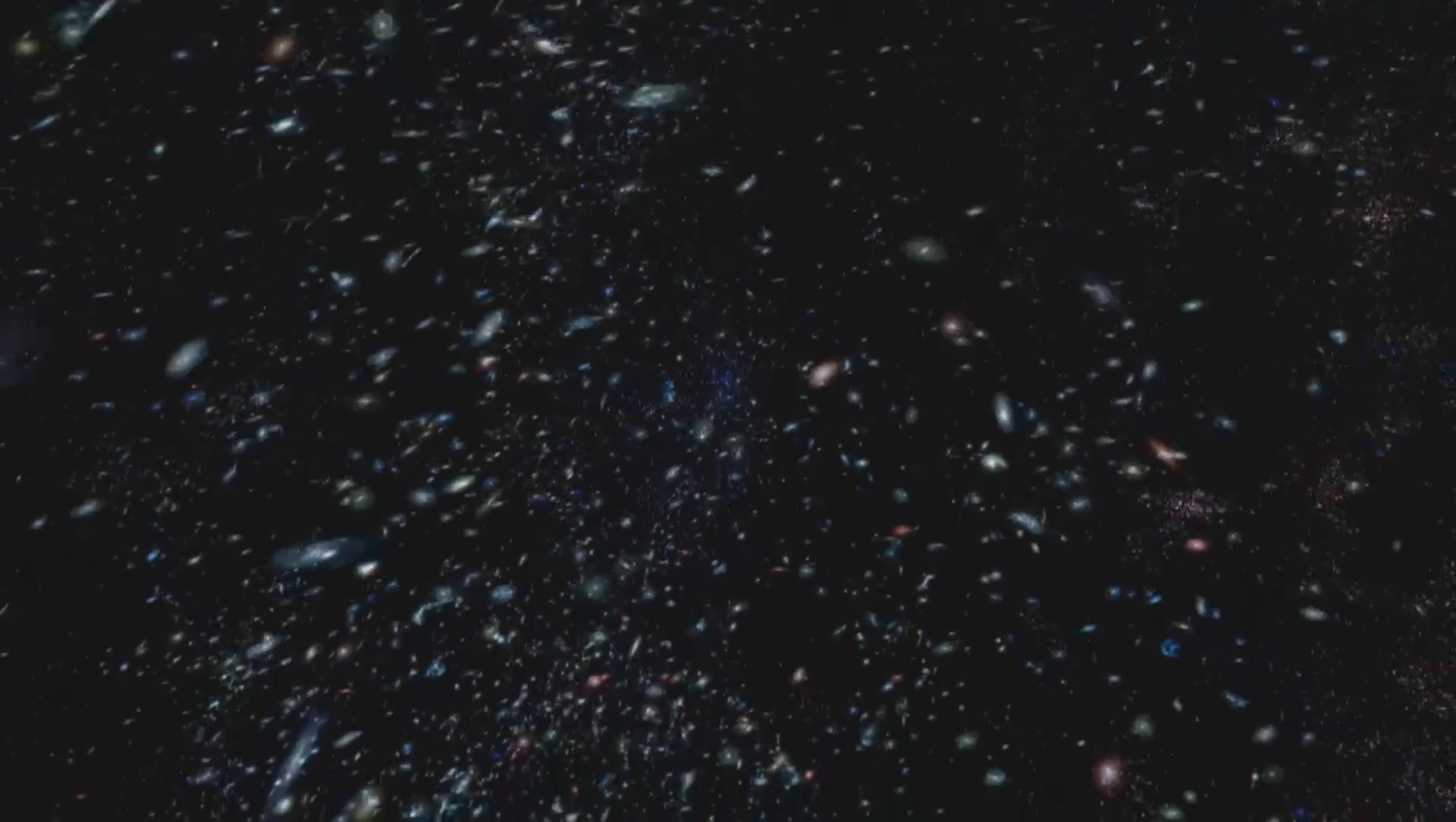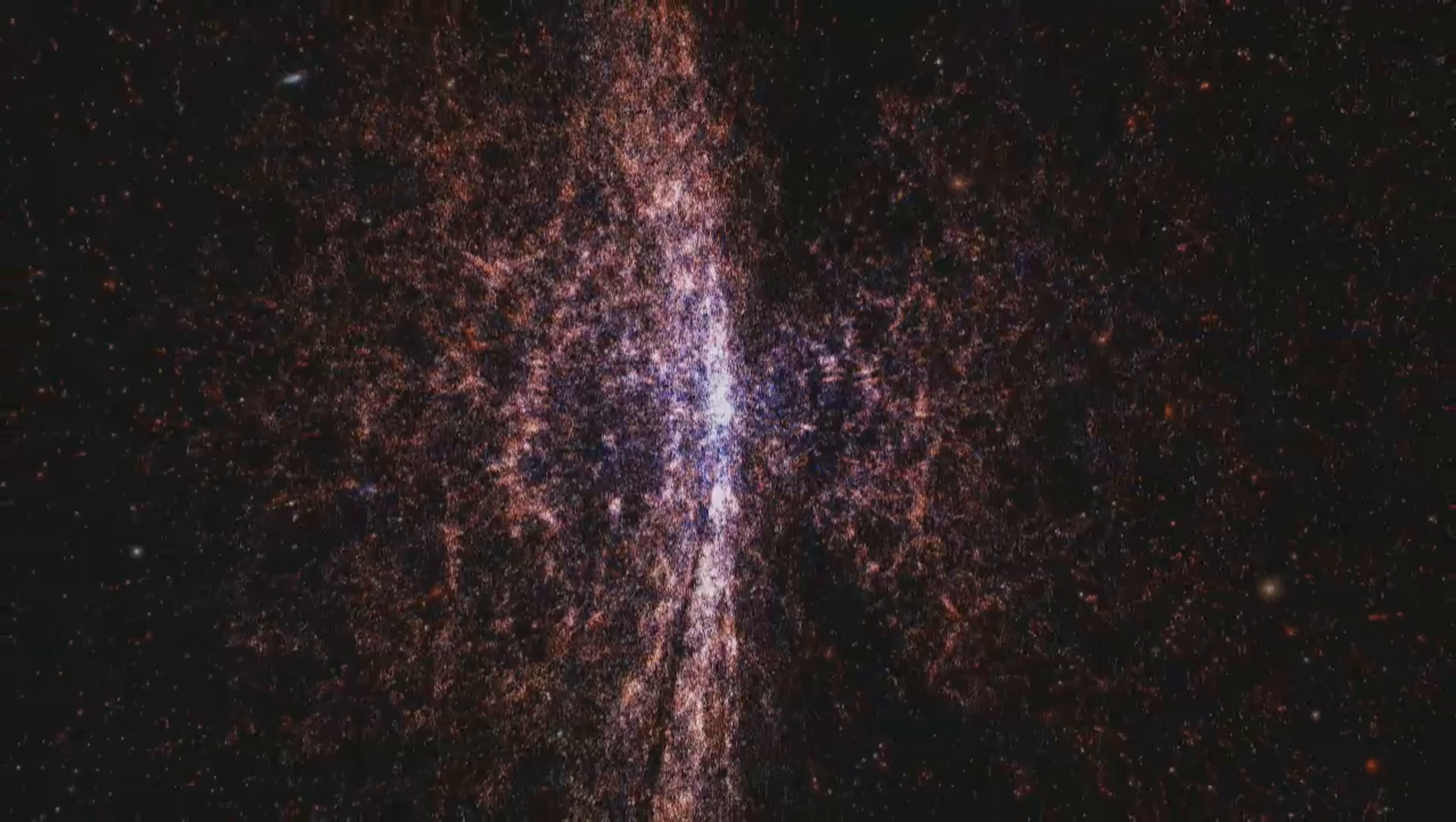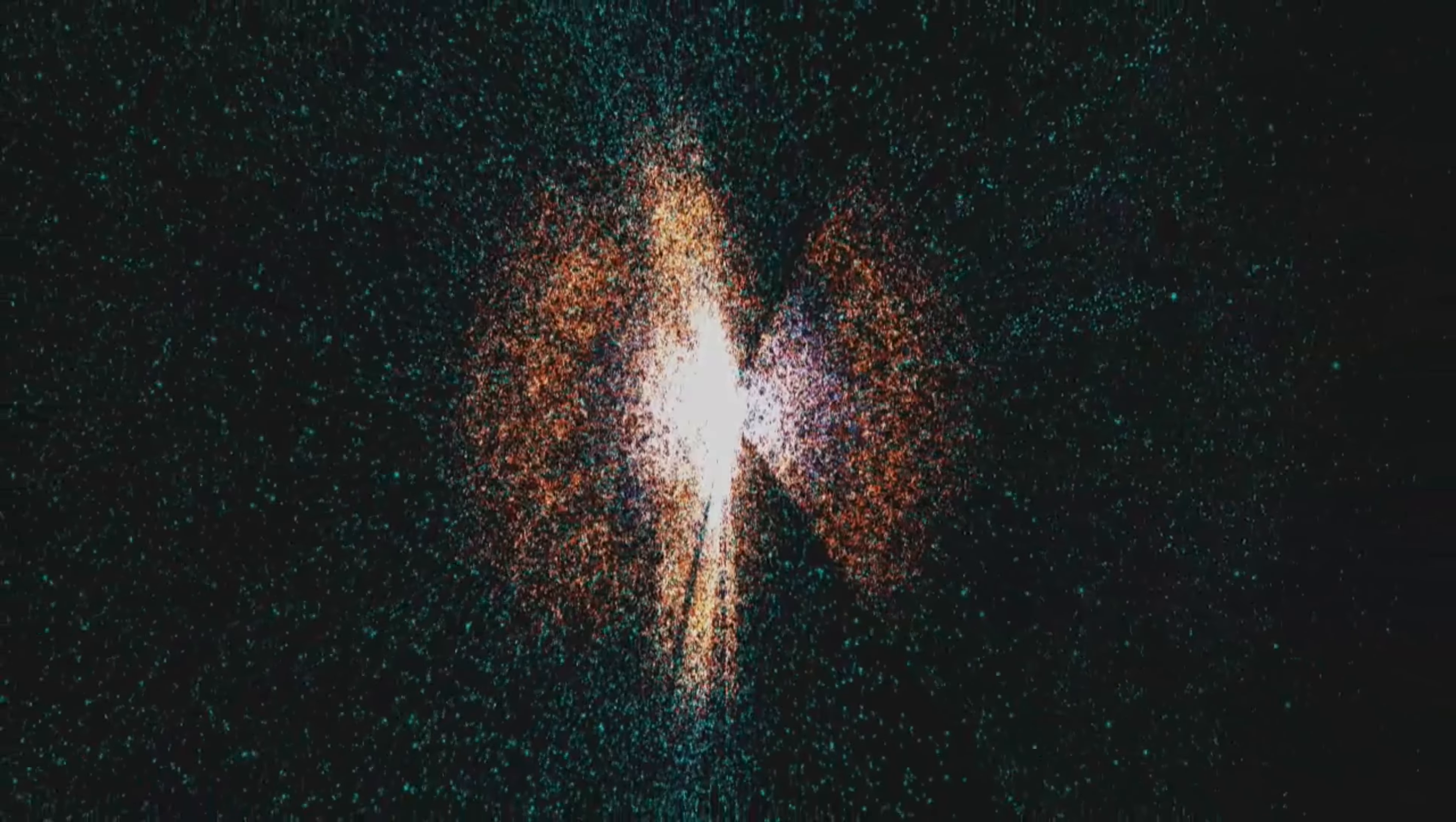The second evidence for a flat universe is large-scale structure. Galaxies and galaxy clusters are not randomly scattered across the cosmos. They form intricate patterns revealing clues about the universe's geometry. Surveys like the Sloan Digital Sky Survey, SDSS, have mapped the large-scale distribution of these structures. And the observed patterns of clustering and voids align beautifully with what we expect in a flat universe.